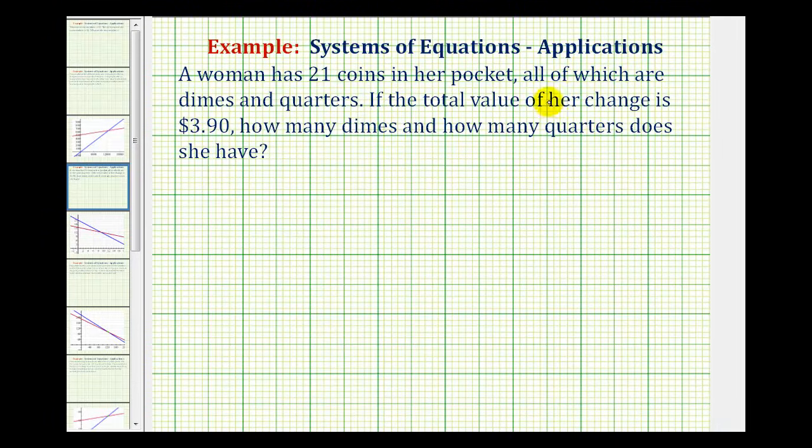A woman has 21 coins in her pocket, all of which are dimes and quarters. If the total value of her change is $3.90, how many dimes and how many quarters does she have?